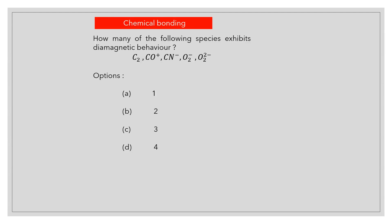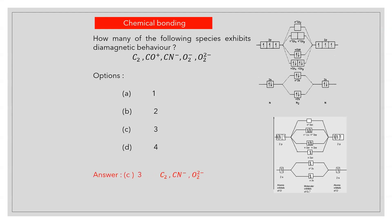How many of the following species exhibits diamagnetic behavior? C2, CO+, CN-, O2-, O2 2-. Answer C: 3.